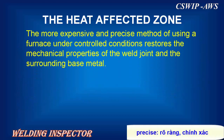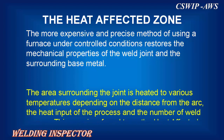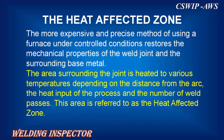The more expensive and precise method of using a furnace under controlled conditions restores the mechanical properties of the weld joint in the surrounding base metal. The area surrounding the joint is heated at various temperatures depending on the distance from the arc, the heat input of the process, and the number of weld passes. This area is referred to as the heat affected zone.